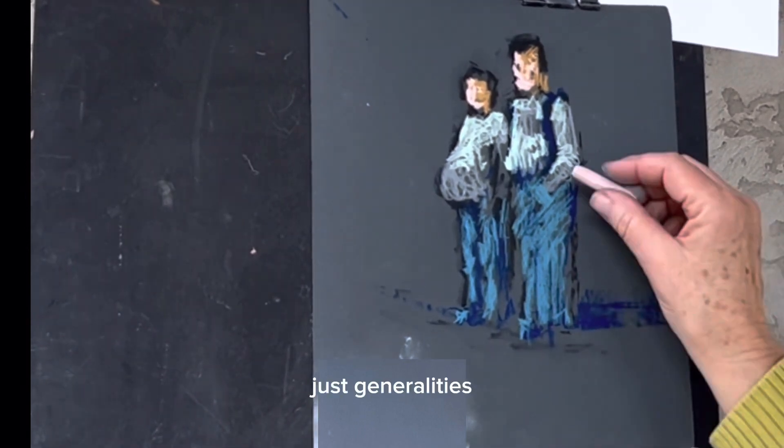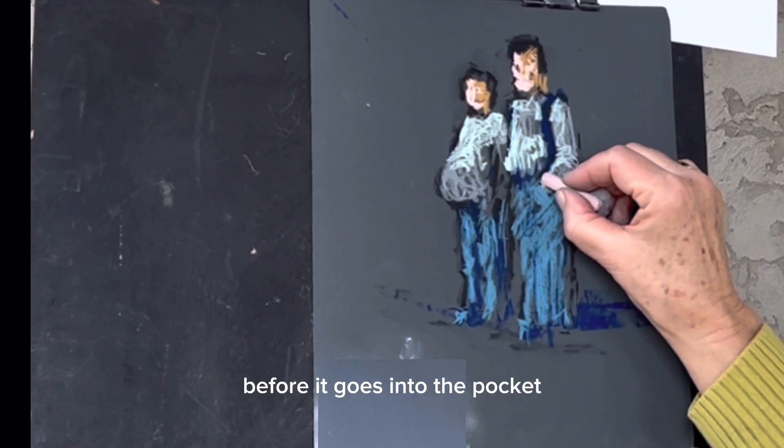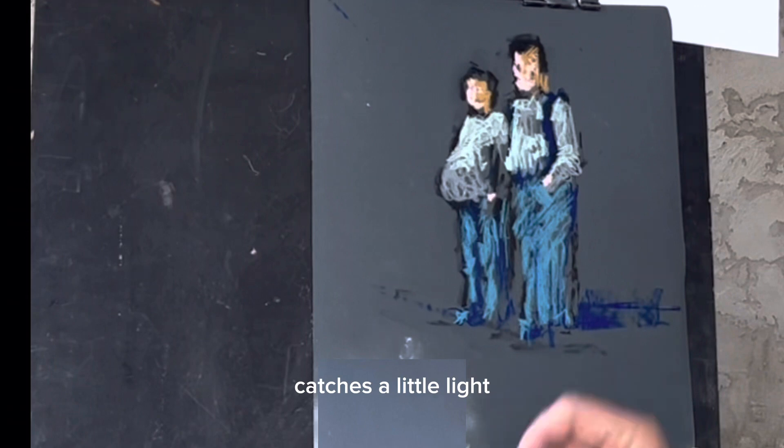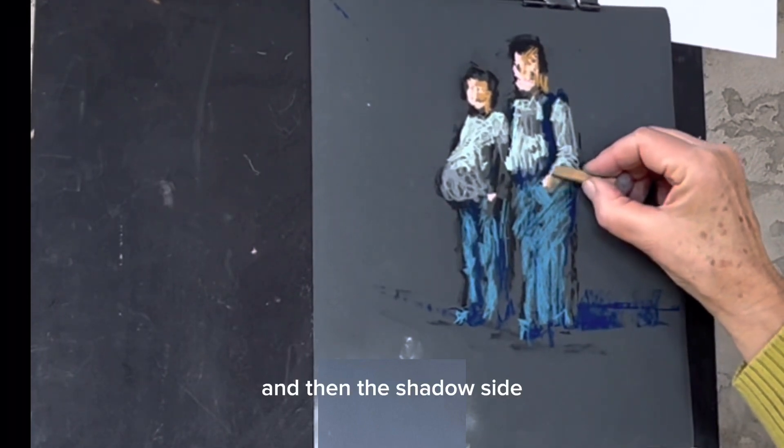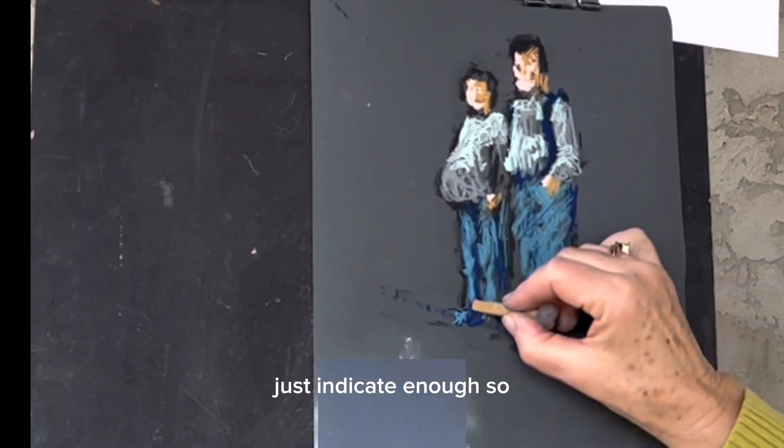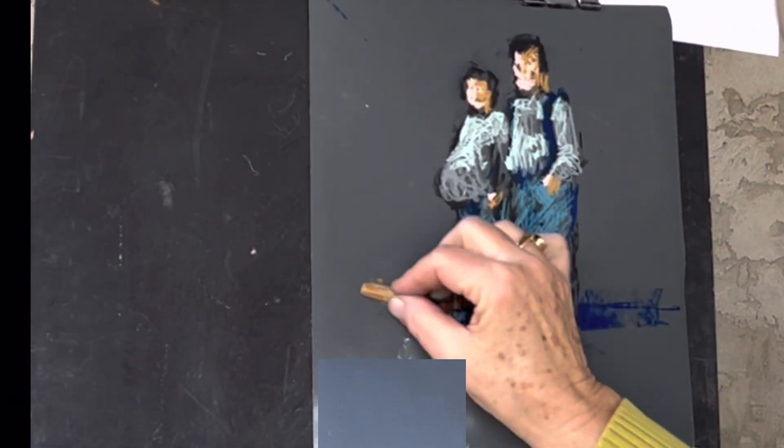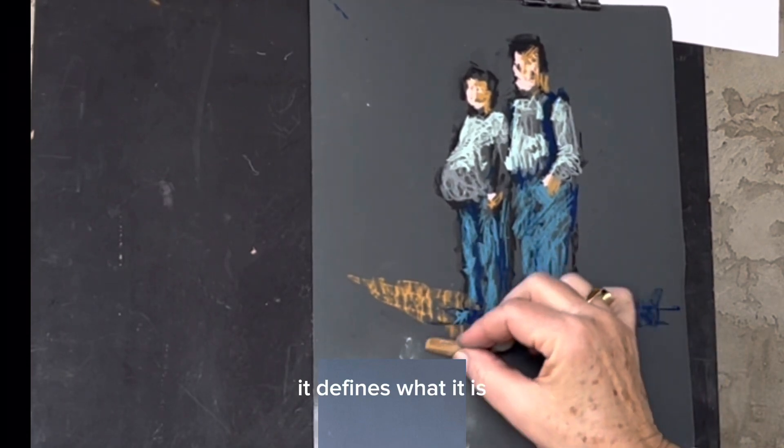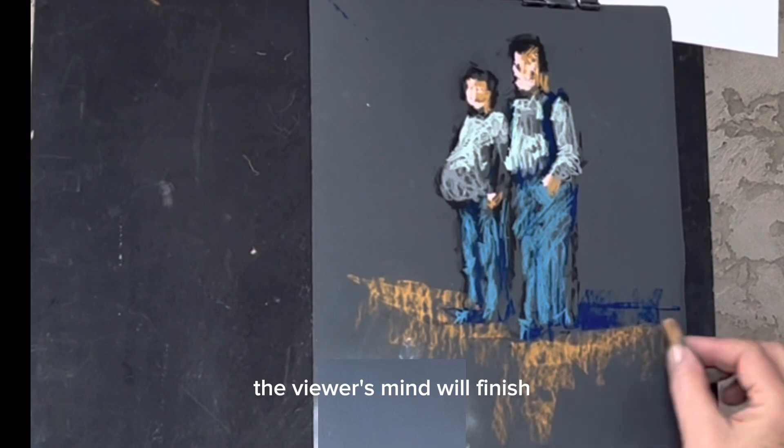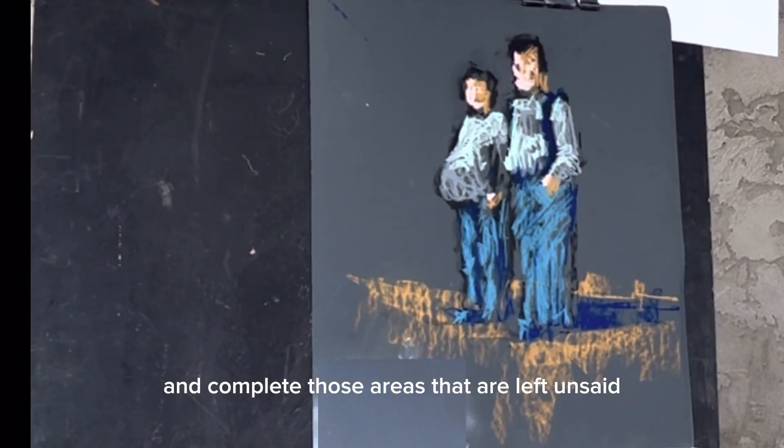Yeah, just generalities. A little skin where his hand, before it goes into the pocket, catches a little light. And then the shadow side. You don't need to spell it all out. Just indicate enough so it defines what it is. The viewer's mind will finish and complete those areas that are left unsaid. You don't have to spell out every single little aspect.